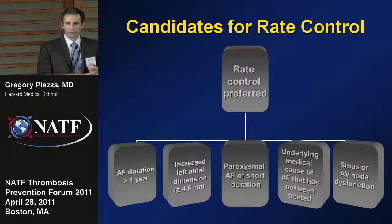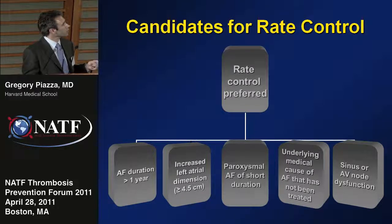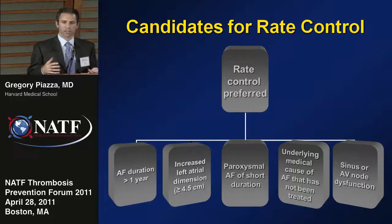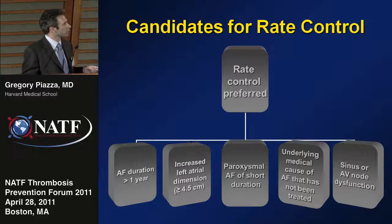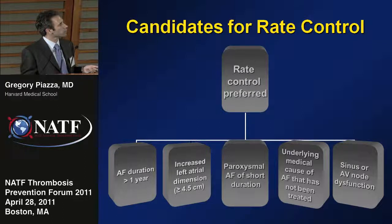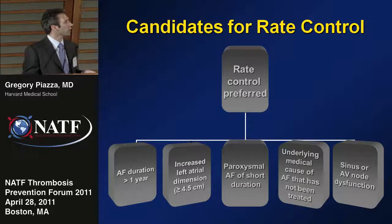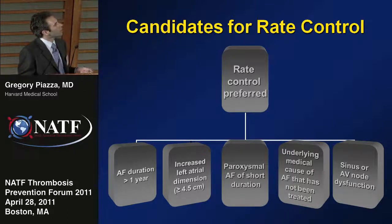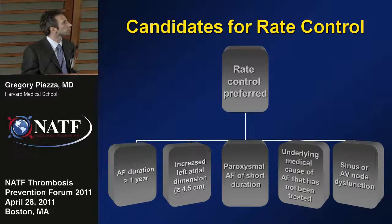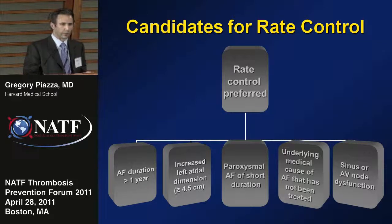Rate control is preferred in patients with atrial fibrillation lasting longer than one year, and in patients with increased left atrial dimension, where disordered electrical activity makes a rhythm control agent unlikely to work. Other candidates include patients with paroxysmal atrial fibrillation, who tend to come in and out of AF and respond less well to rhythm control. Also, patients with underlying untreated medical causes of atrial fibrillation, and patients with sinus or atrioventricular node dysfunction, who tend to develop bradycardia on antiarrhythmic therapy.